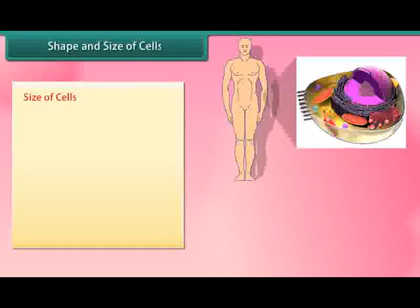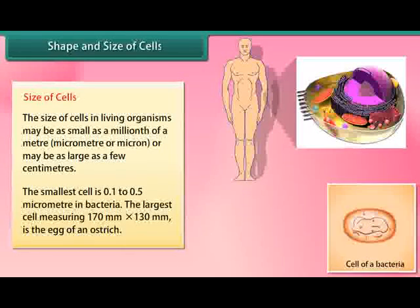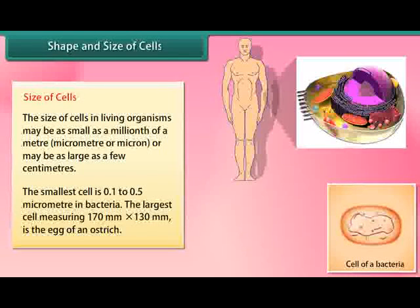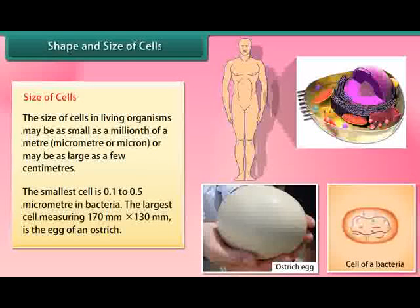Size of cells: The size of cells in living organisms may be as small as a millionth of a meter — a micrometer or micron — or may be as large as a few centimeters. The smallest cell is 0.1 to 0.5 micrometers in bacteria. The largest cell, measuring 170 mm by 130 mm, is the egg of an ostrich.